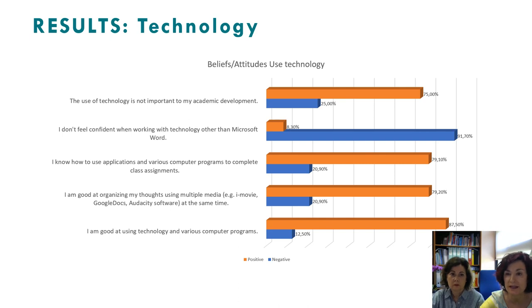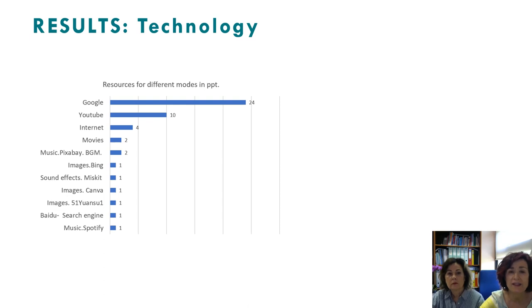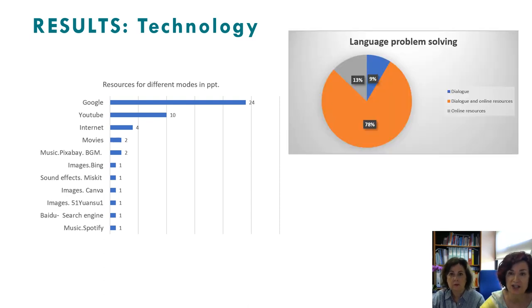Regarding technology, 75% of students mentioned it was important for their academic development. They felt confident using all kinds of technology, knew how to use the applications, and were good at organizing their thoughts using computer programs. The resources they used were mainly Google, YouTube, the Internet, and then movies and different websites to find images.